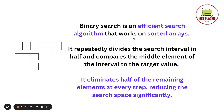Binary search is an efficient searching algorithm that works on sorted arrays. Sorted arrays means the elements are in either increasing or decreasing order instead of being random. Binary search repeatedly divides the search interval in half. Basically, in the given sorted array we find the middle element, compare it with the element being searched, and determine if the target is less than or greater than the middle element, which eliminates half of the remaining elements at each step, significantly reducing the search space.